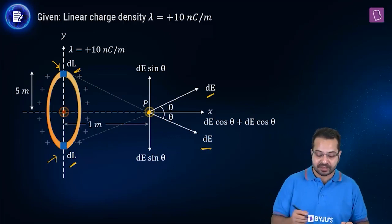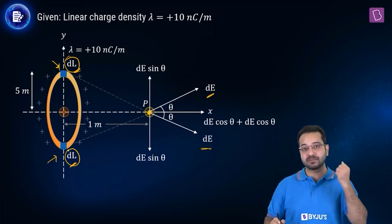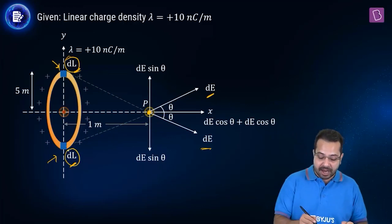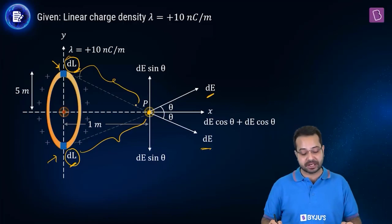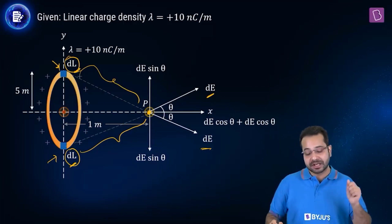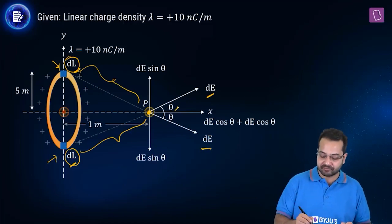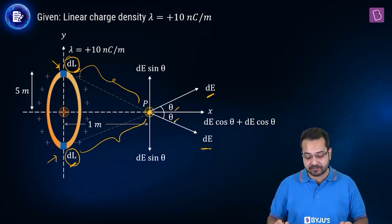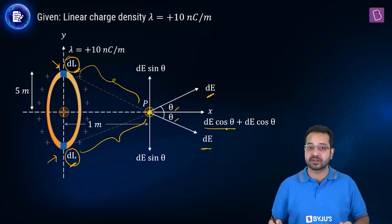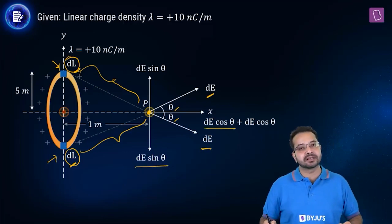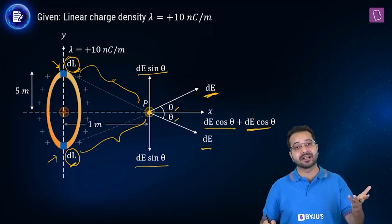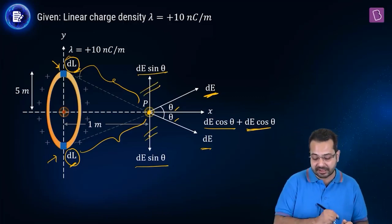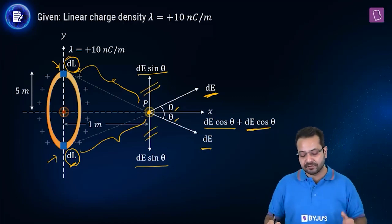The magnitudes are going to be the same because both dL elements have the same charge (uniformly charged ring) and the same distance to point P. So if this angle is theta, this angle is also theta by symmetry. Resolving dE gives one component dE·cosθ and another dE·sinθ. For both elements, the dE·sinθ components cancel, and the net field is 2·dE·cosθ in the x direction.